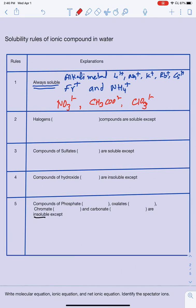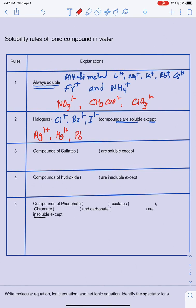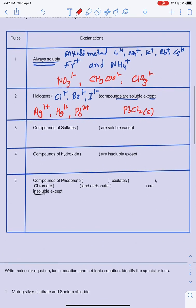Rule 2 is about the halogens. The chlorides (Cl1−), bromides (Br1−), and iodides (I1−) dissolve in water, except when they are bonded with silver (Ag1+), mercury (Hg1+), or lead (Pb2+). Those are the three exceptions. So, for example, PbCl2 is going to be a solid. Any other cation combined with those halides will be soluble in water.